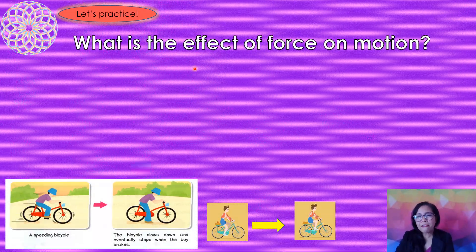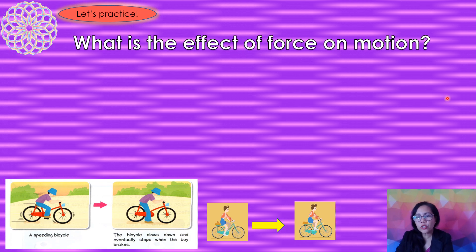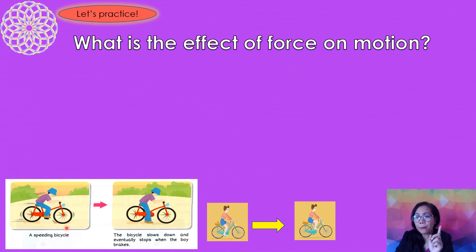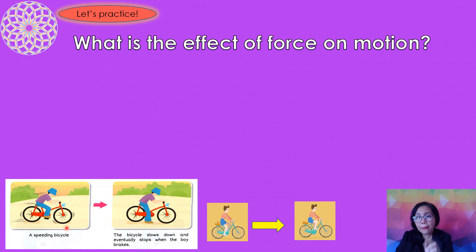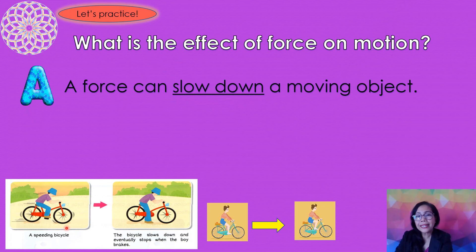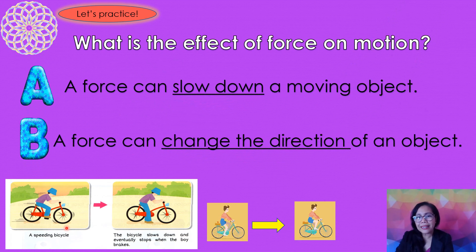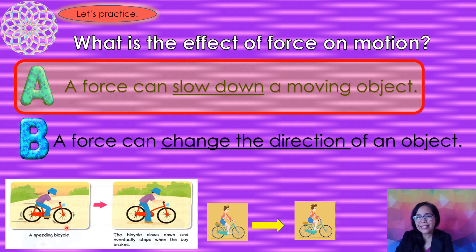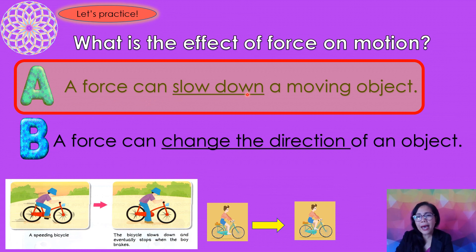What is the effect of force on motion? Look at these pictures. This is a speeding or moving bicycle. When you apply brakes, what will happen? Choose between letter A and letter B. The correct answer is letter A — a force can slow down a moving object. Well done!